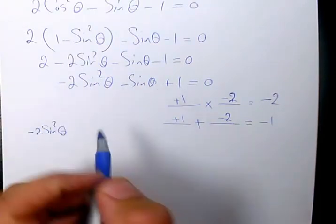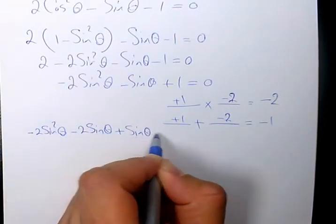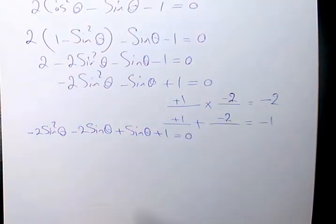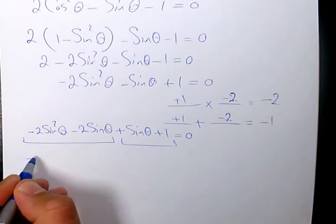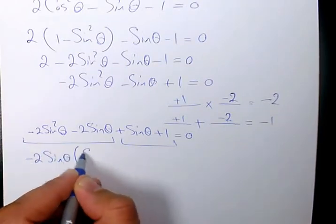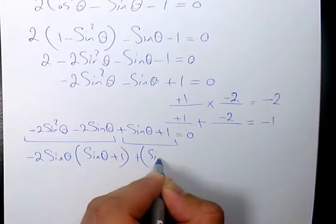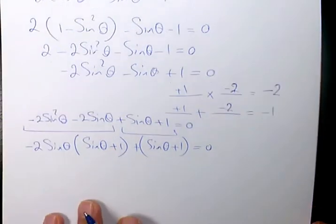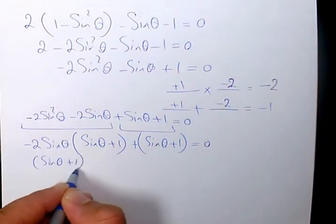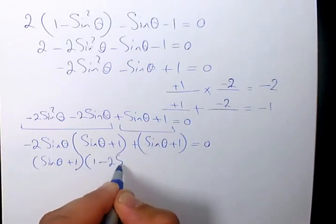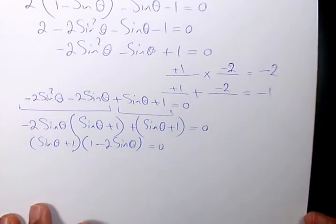So I rewrite negative 2 sine squared theta minus sine theta as negative 2 sine squared theta minus 2 sine theta plus sine theta plus 1 equals 0. Now doing group factoring, the GCF of the first group is negative 2 sine theta, giving negative 2 sine theta times (sine theta plus 1), and the second group gives (sine theta plus 1). Factoring out (sine theta plus 1) gives (sine theta plus 1)(1 minus 2 sine theta) equals 0.